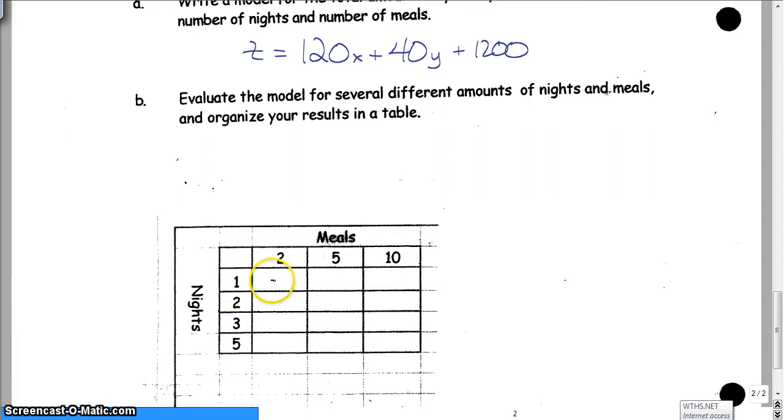So to do this for one night and two meals, we would just do $120 times one plus $40 times two meals plus $1,200. And that's going to be $120 plus $80 plus $1,200, which is going to end up giving us a $1,500 trip if we go for one night and have two meals.